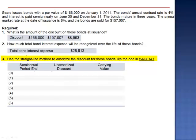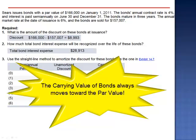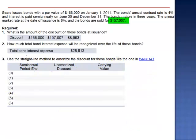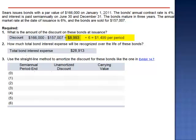Requirement 3 asks us to use the straight-line method to amortize the discount for these bonds. The straight-line method takes total bond interest expense and allocates it evenly per period. The carrying value of bonds always moves toward the face value. The carrying value of these bonds begins at $157,007, and over the 3-year period, the carrying value will increase to $166,000 — a total increase of $8,993, the amount of the discount. We'll take the $8,993 discount, divide it by 6, and the carrying value will increase by $1,499 per period, every 6 months. Similarly, total bond interest expense of $28,913 will be allocated evenly over the 6 periods.